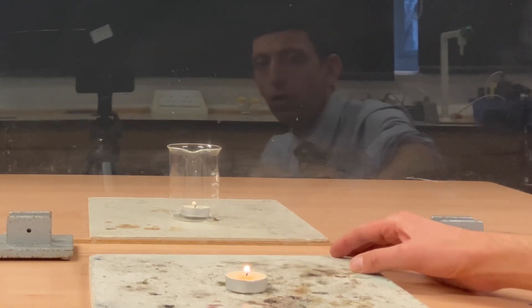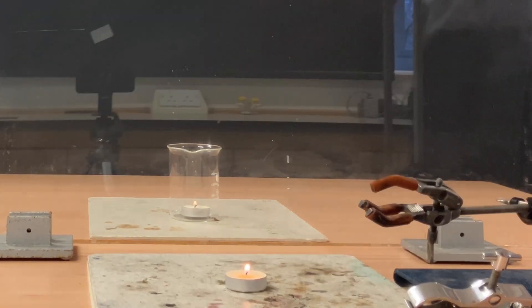Now carefully adjust the position of the burning tea light so the reflection of it lines up with the wick of the tea light in the beaker so that it looks like that candle is also burning.